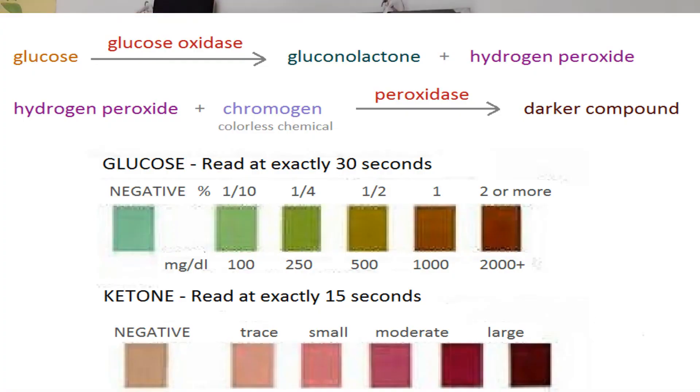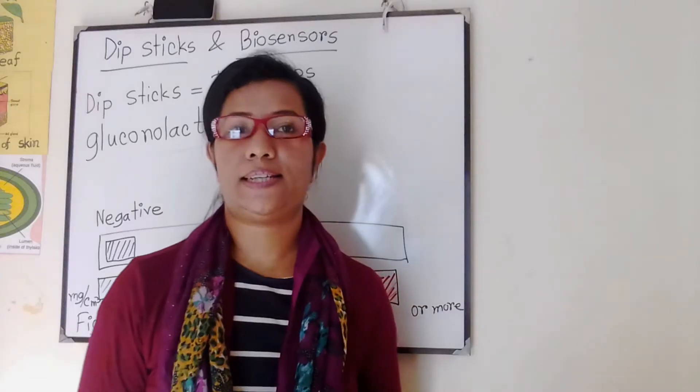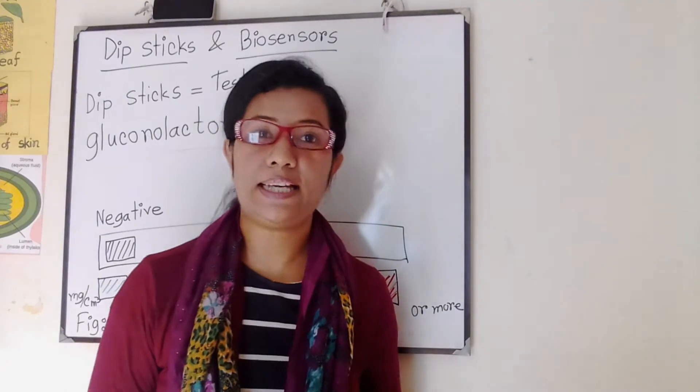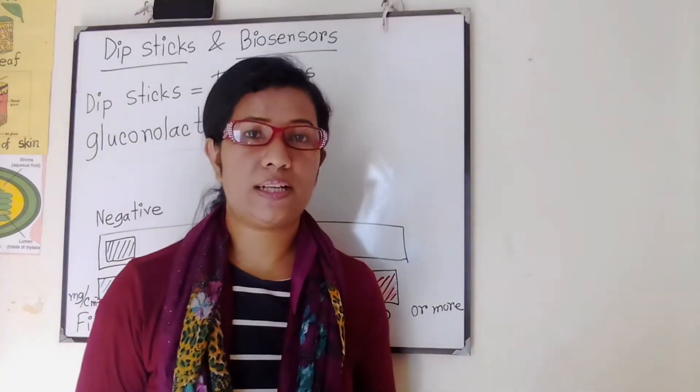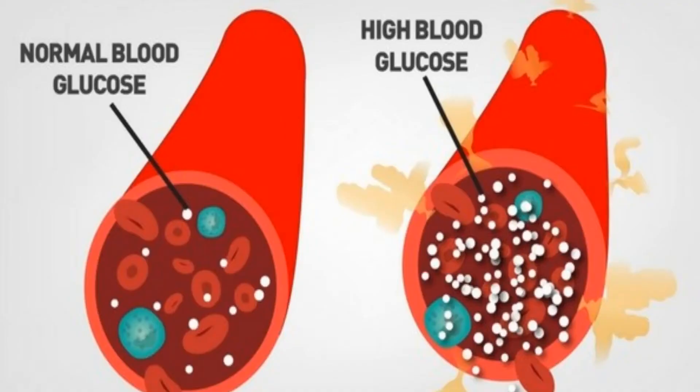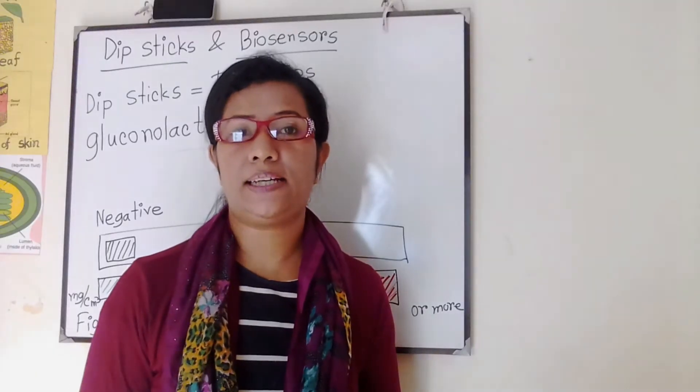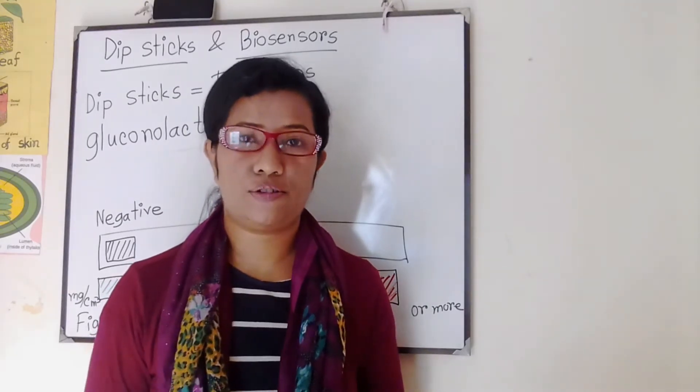One problem with urine tests is that they don't indicate the current blood glucose concentration, but rather whether the concentration was higher than the renal threshold in the period of time while urine was collecting in the bladder. So a biosensor...